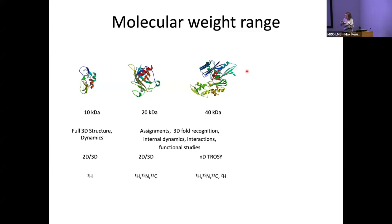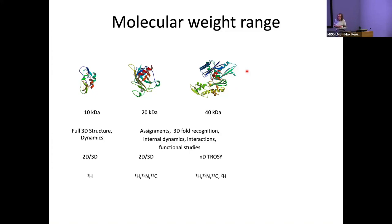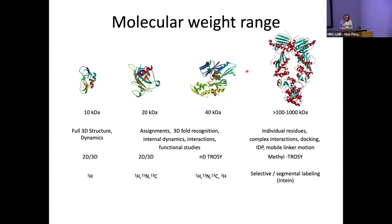With 15N and 13C labeling we can look at structure, secondary structure elements, binding studies, functional studies, and dynamics for systems between 20 to 30 kilodaltons. When it's a bit bigger — around 40 kilodaltons — we might ask you to deuterate, replacing non-exchangeable protons with deuterium. That really helps our experiments.